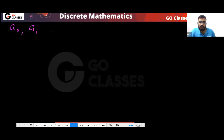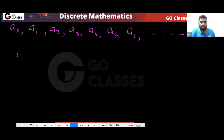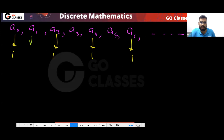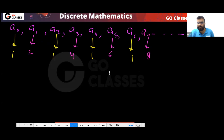Your sequence is: a_0, a_1, a_2, a_3, a_4, a_5, a_6, and so on. So a_0 is 1, a_2 is 1, a_4 is 1, and so on. And a_1 is 2, a_3 is 4, a_5 is 6, a_7 is 8, like this.